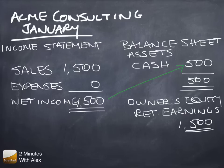Now there's a serious problem because the balance sheet no longer balances. $500 in total assets no longer equals the $1,500 of retained earnings. This is serious trouble.